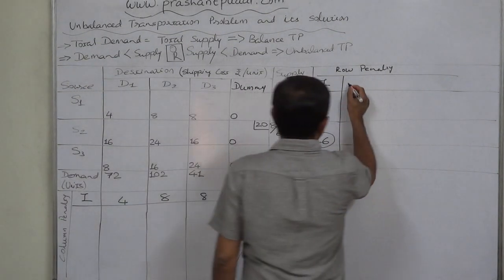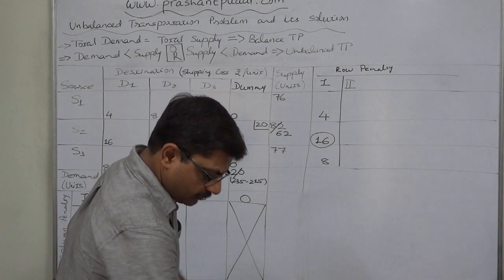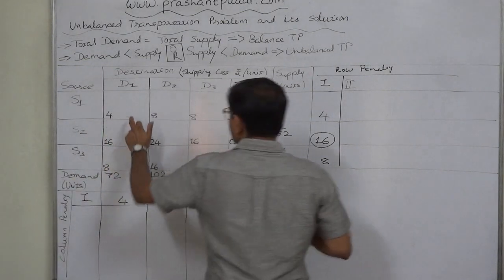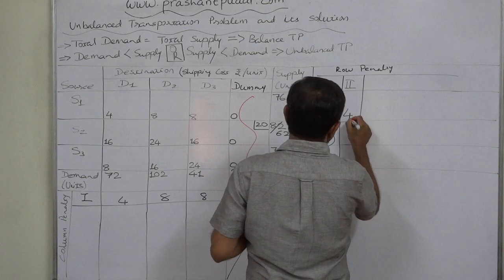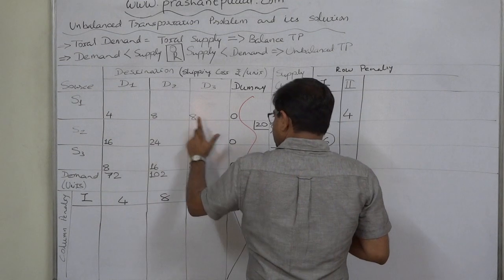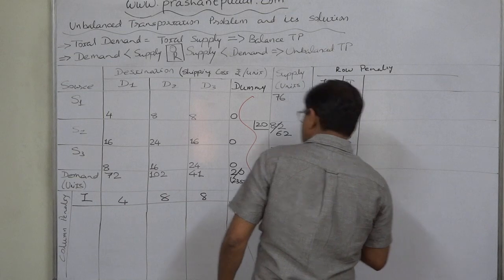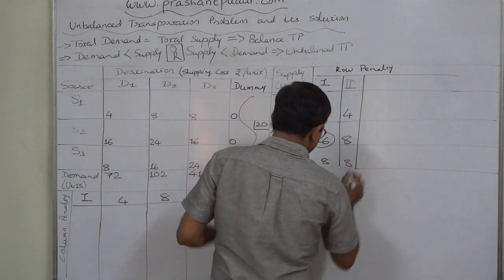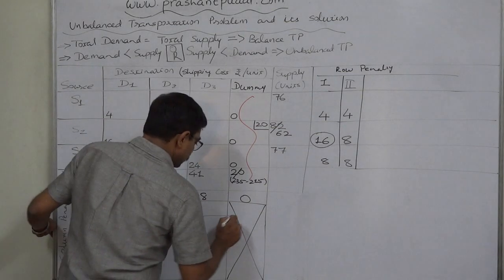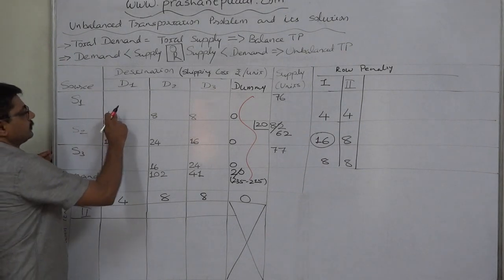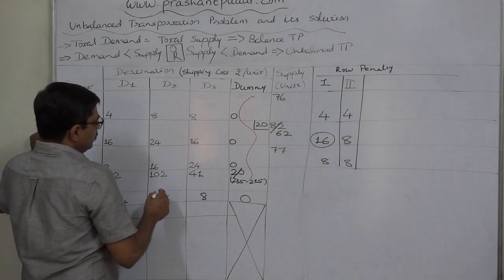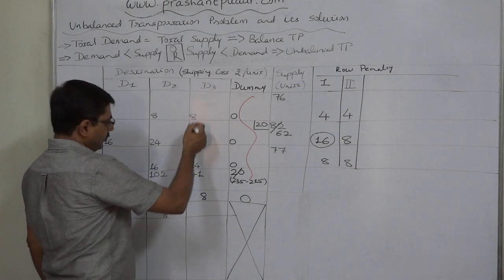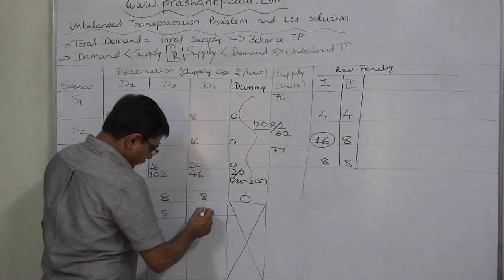In the next round, we cancel the dummy column and recalculate penalties. Row S1: lowest cost 4, next higher 8, penalty = 4. Row S2: lowest cost 16, next higher 24, penalty = 8. Row S3: lowest cost 8, next higher 16, penalty = 8. Column D1: least cost 4, next higher 8, penalty = 4. Column D2: least cost 8, next higher 16, penalty = 8. Column D3: least cost 8, next higher 16, penalty = 8. There is a tie among several rows and columns with penalty 8.